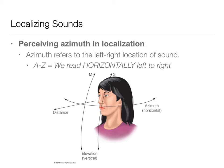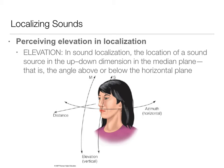We perceive sounds in 3D space, so there are three dimensions. The first is the horizontal plane, called azimuth, which refers to the left-right location of a sound. You can remember that azimuth is the horizontal one because we read left to right — horizontally. So this information moves either right or left in our plane.